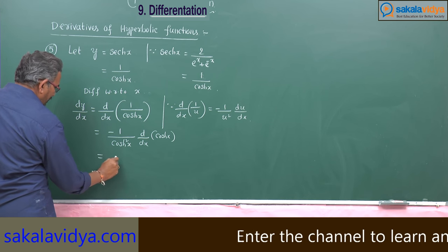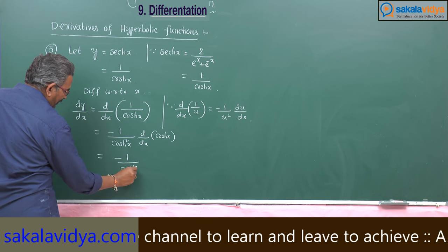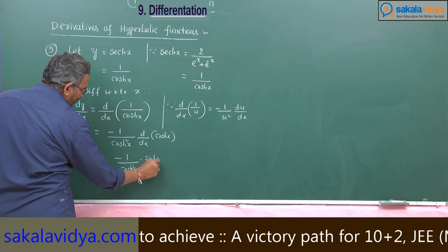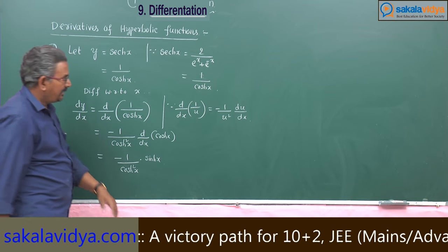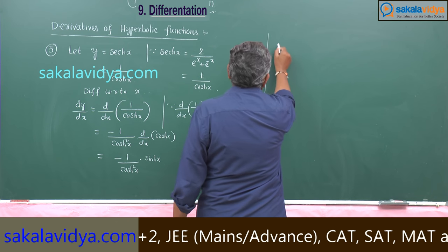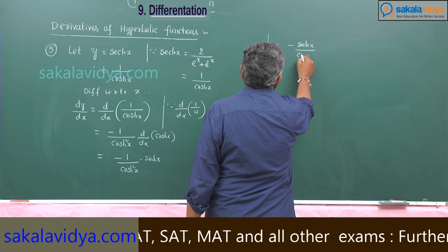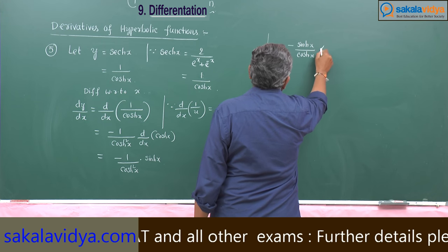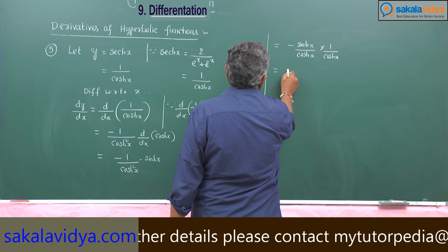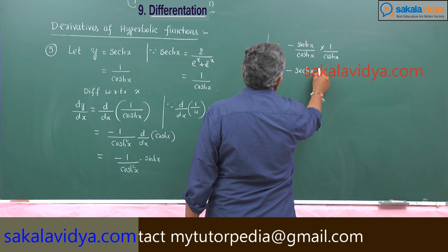This is minus 1 by cosh squared x. The derivative of cosh x is sinh x. So this can be rewritten as minus sinh x by cosh x into 1 by cosh x, which gives minus secant hx into tan hx.